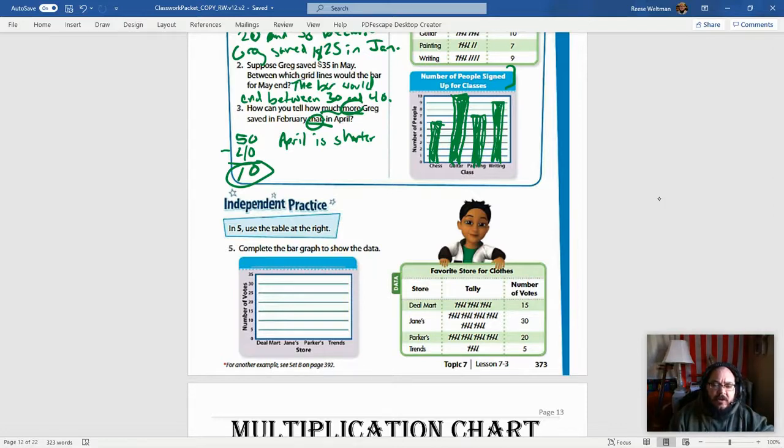Okay, so once again, here's our data table. Favorite store for clothes. That means you want to write that in first, right? Favorite store for clothes, because we need to have our title in there. It should be the same title that we see over here. And now we're going to look at, well, first let's look at our scale. 0, 5, 10, 15, 20, 25, 30. So we're counting by fives. Okay, counting by fives over here on the scale.